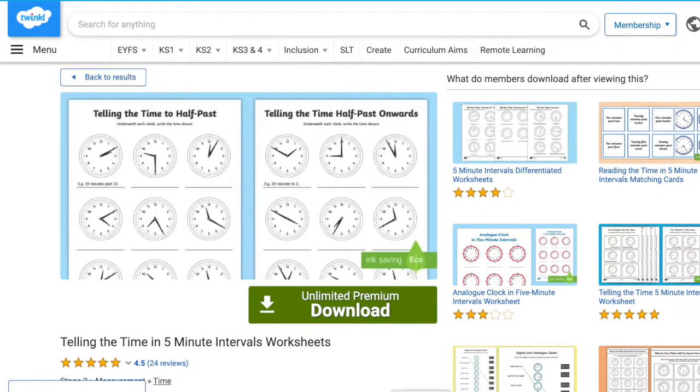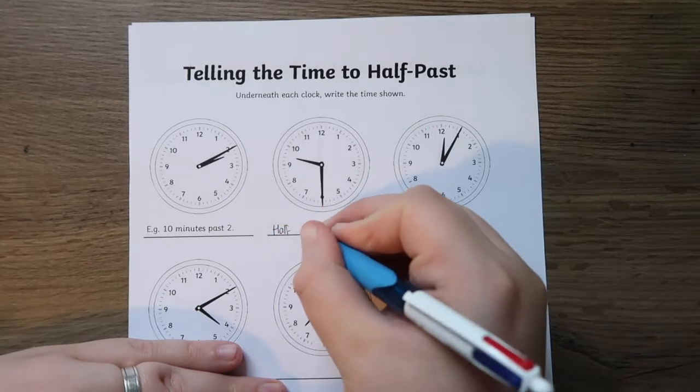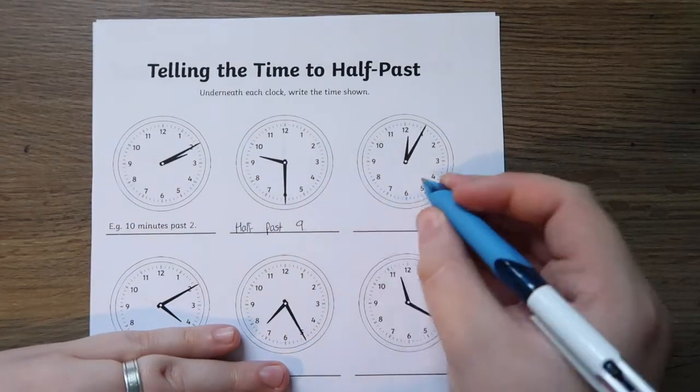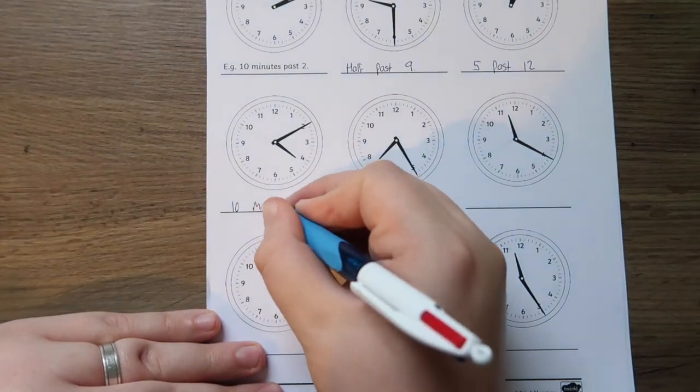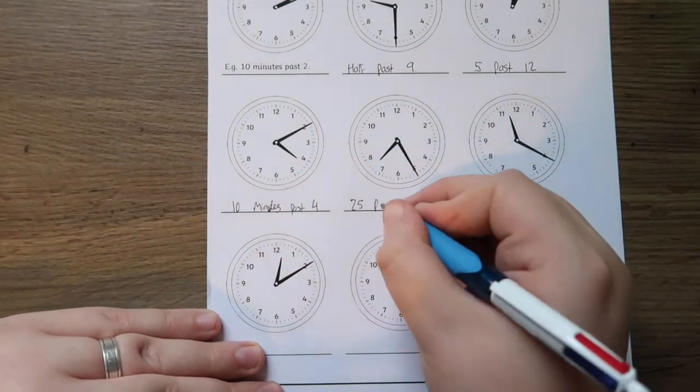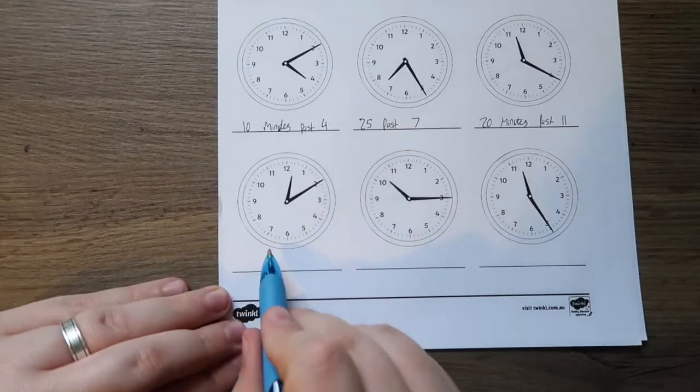The Telling the Time in 5 Minute Intervals worksheets are a great resource to teach children about telling the time in 5 minute intervals. Using these differentiated worksheets to help your children develop their understanding of telling the time in the 5 minute intervals past and to the hour.